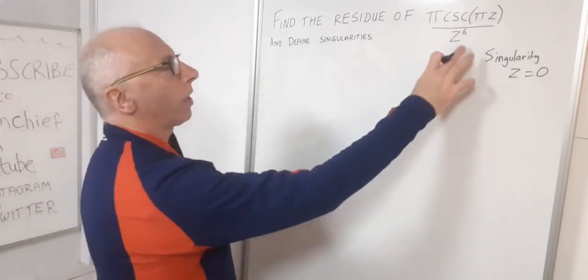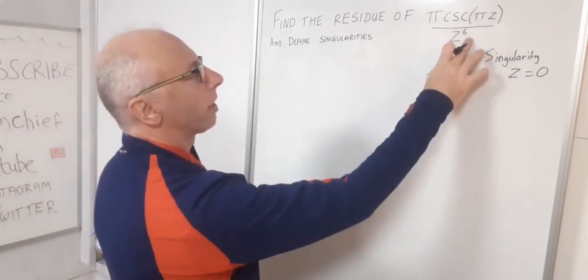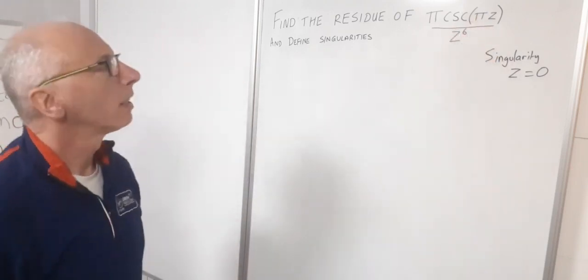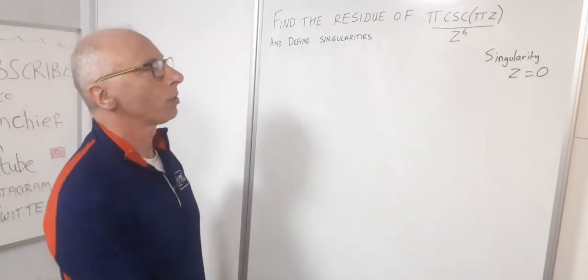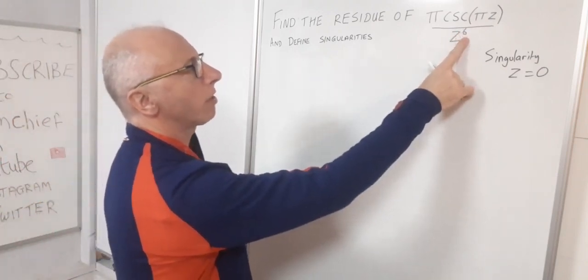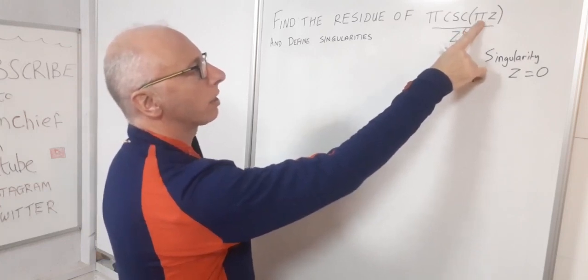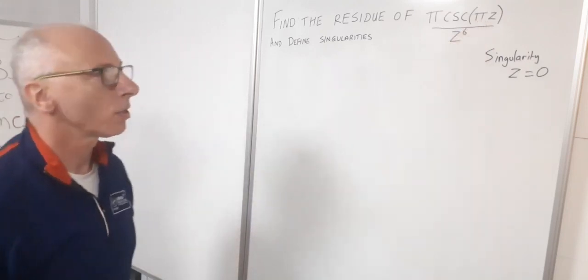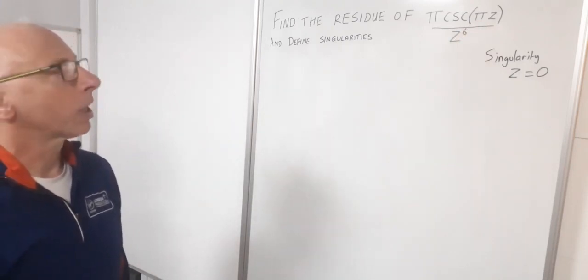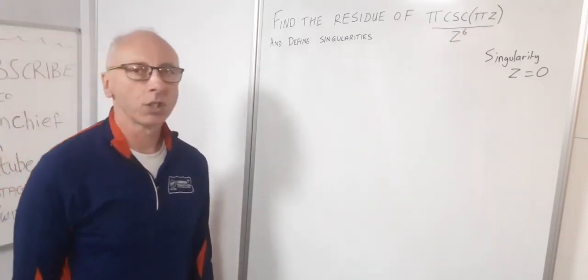So if we want to find the residue of this, we can plug in zero wherever we see a z and maybe that's going to help us find the residues. But we've got a problem: we've got a zero here and the cosecant at zero is undefined as well. So that's also another singularity. That gives us a bit of a problem. We can't do the normal rules for the residues.